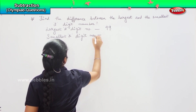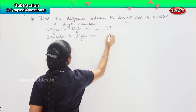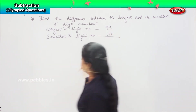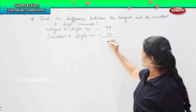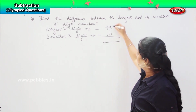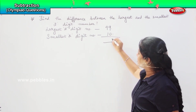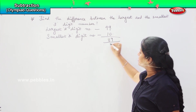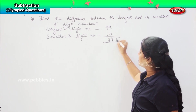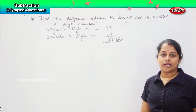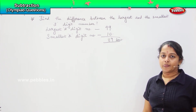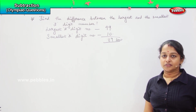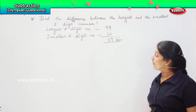So, you need to find the difference between 99 and 10. 9 minus 0 is 9 and 9 minus 1 is 8, so the answer is 89. Is it clear? Did you understand?